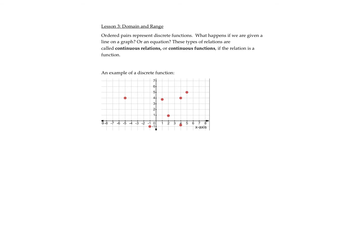The other type of relation is called a continuous relation or continuous function, where the points are joined together into a line. So if you have just a discrete function where it's just points or ordered pairs, I could list these as ordered pairs.